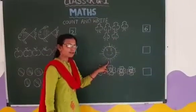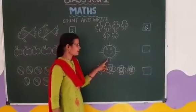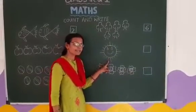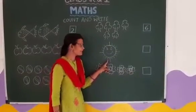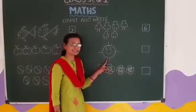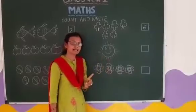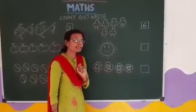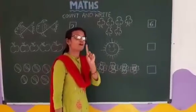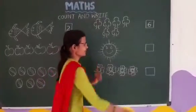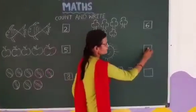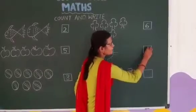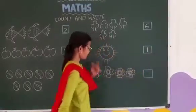Can you guess? What is this? Yes, this is sun. How many sun? 1 sun. So we will write 1 sun here.